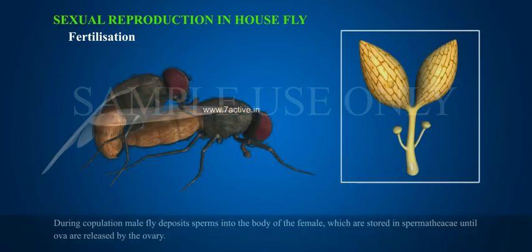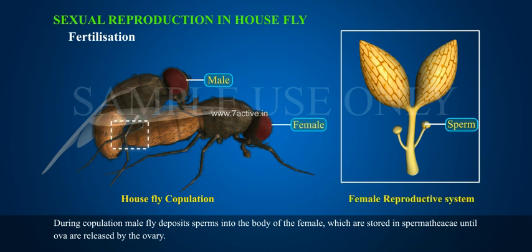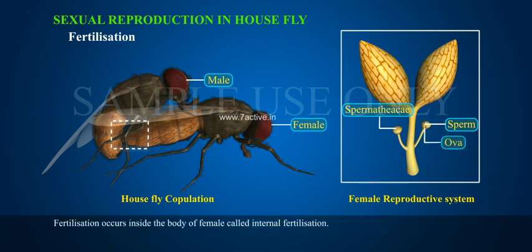During copulation, the male fly deposits sperms into the body of the female, which are stored in the spermatheca until ova are released by the ovary. Fertilization occurs inside the body of the female, called internal fertilization.